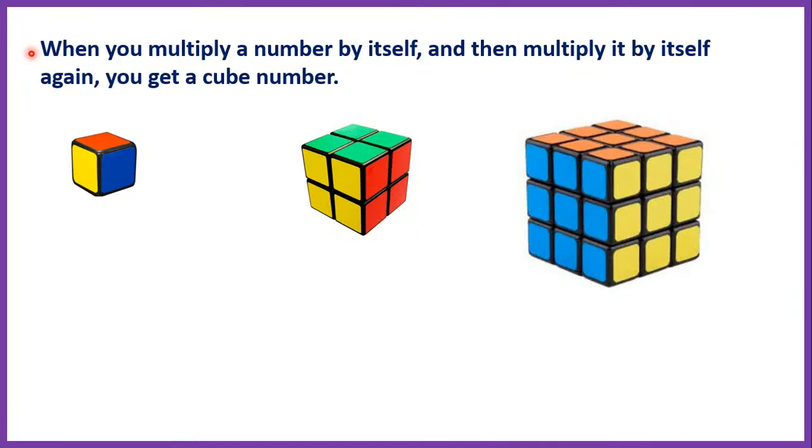When you multiply a number by itself and then multiply it by itself again, you get a cube number. And they're called cube numbers because they can be represented as cubes.